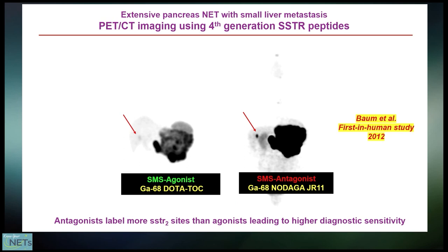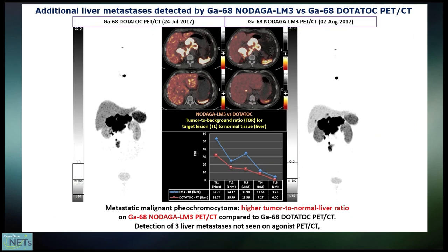We performed already more than 10 years ago the first patient studies using antagonists, in this case Nodaga-JR11, which you see here on the right. You see that the uptake in the same patient in the tumor is much higher, and the background in the liver is much lower, which allows detection of quite small lesions, as also shown on this slide, where you see on the left the scan with DOTA-TOC PET-CT and a large tumor and some uptake in lymph node metastasis.